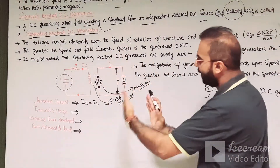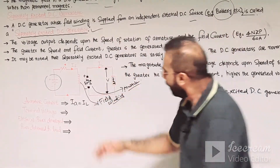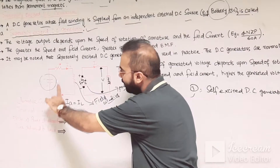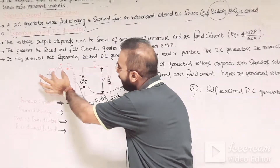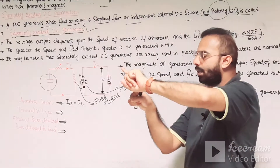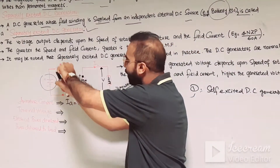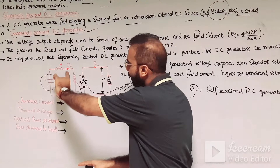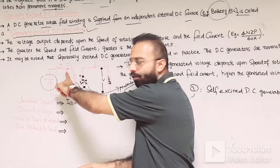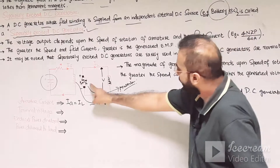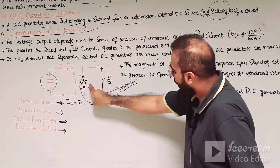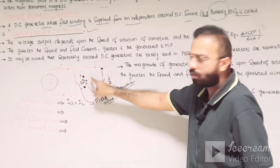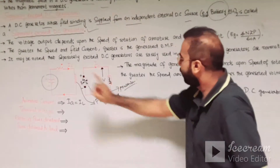This is the separately excited DC generator diagram. The field winding is connected to an external DC supply source, and this is the variable resistor by which we can increase or decrease — that is, vary — the amount of field current. The MMF will decrease or increase accordingly. This is the armature winding in which the generated EMF is produced, the working voltage is produced, and the load is connected with the armature.